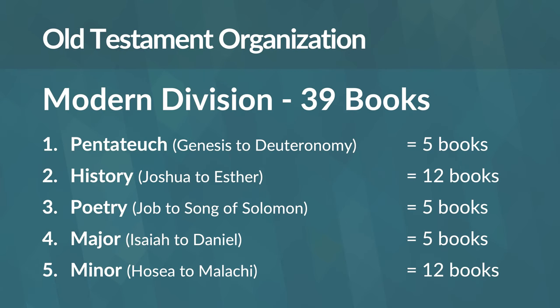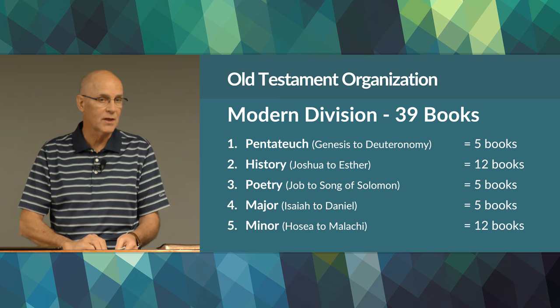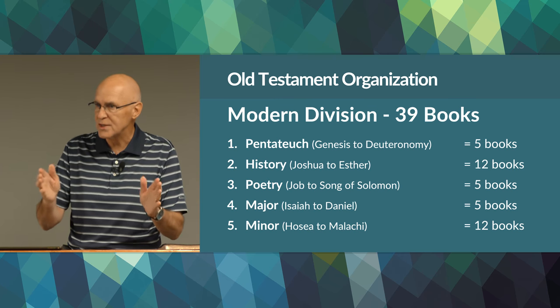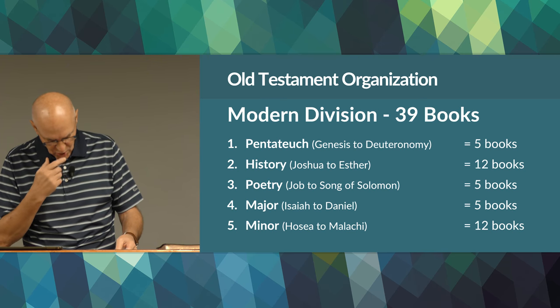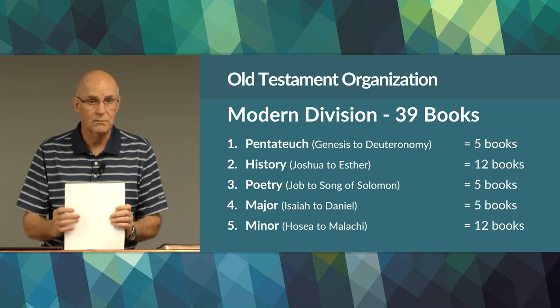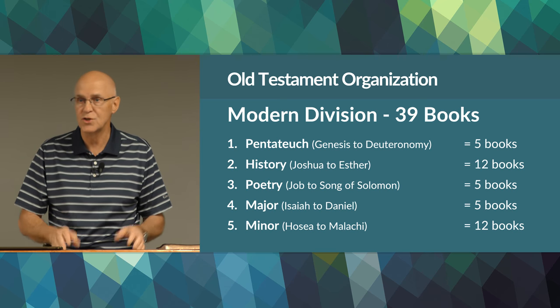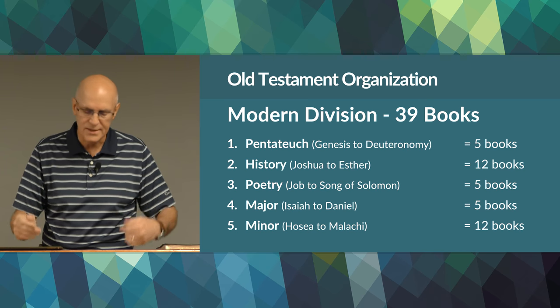Today we have the same books but divided differently: the Pentateuch — Genesis to Deuteronomy — five books; History — Joshua to Esther — 12 books; Poetry — Job to Song of Solomon — five books; Major Prophets — Isaiah to Daniel — five longer books, called major because they're longer; and Minor Prophets — Hosea to Malachi — 12 books, called minor not because they're less important, but because their writings are shorter. That gives us 39 books — the same material, just chopped up and organized differently.